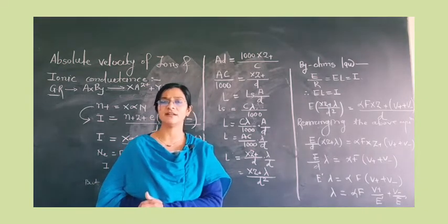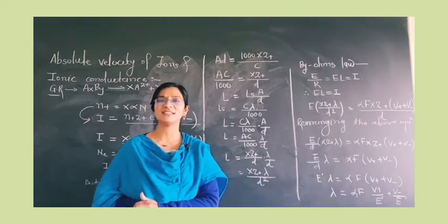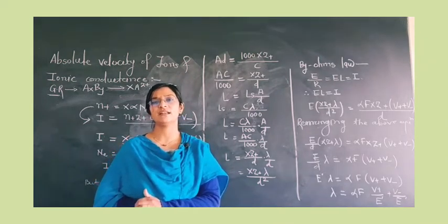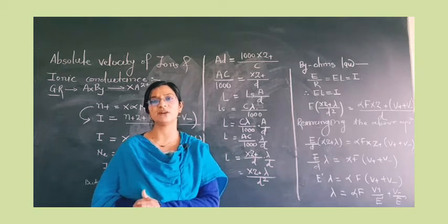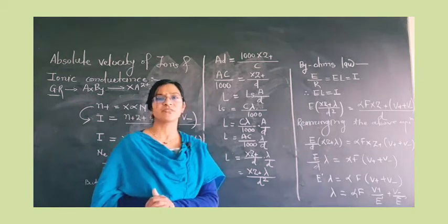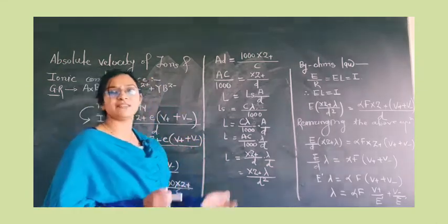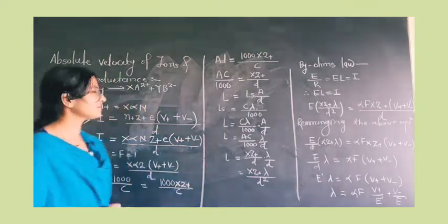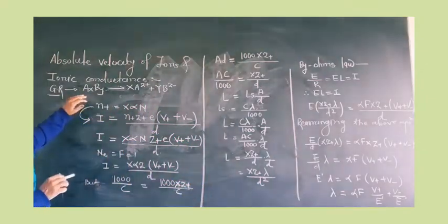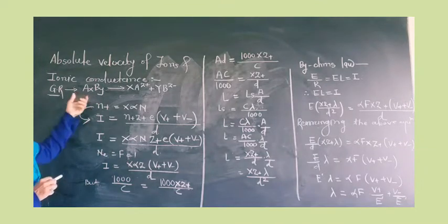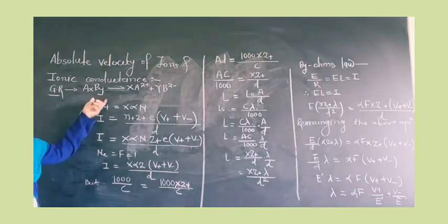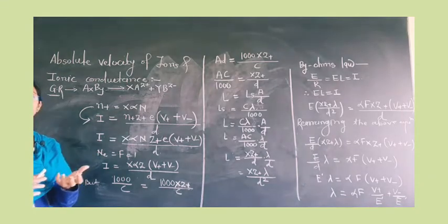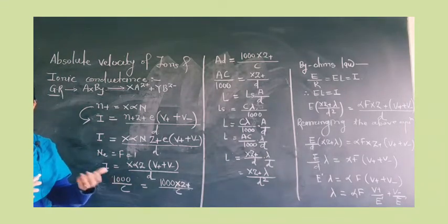Let us start to determine how much capacity ions have to carry the current and how we find out the mobility of the ions. I will write down the derivation here and we will discuss it step by step. Before starting the derivation, we should understand the nature of the electrolyte — whatever electrolyte we take for the study of current mobility.